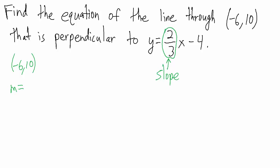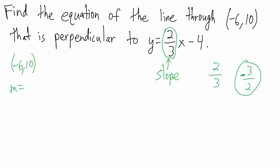Two-thirds is the slope of the given line, and the line we want is perpendicular to it, so it will have a slope that's the negative reciprocal of two-thirds. The reciprocal of two-thirds is three-halves, and making it negative gives us negative three-halves. If two-thirds were already negative, the negative reciprocal would be positive three-halves. Here the slope is positive two-thirds, so the negative reciprocal is negative three-halves — that's the slope of the line we want.